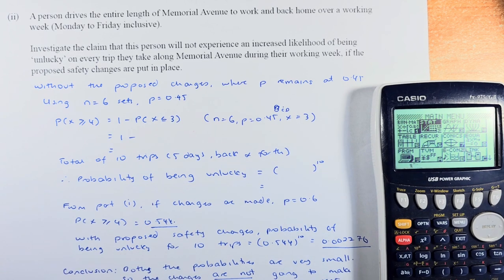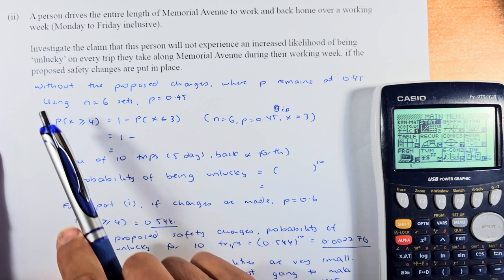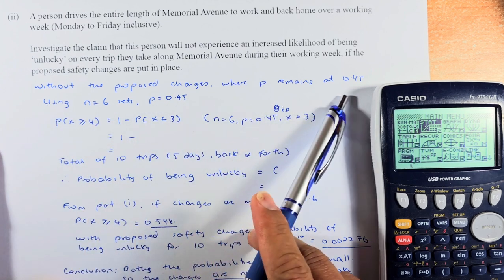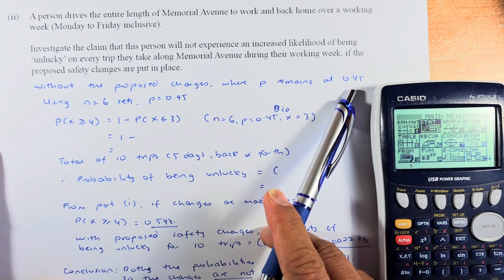A person drives the entire length of Memorial Avenue to work and back home over a working week, Monday to Friday. So there are 5 days, and if they go up and down, it's going to be 10 trips altogether. Investigate the claim that this person will not experience an increased likelihood of being unlucky on every trip they take along Memorial Avenue during their working week if the proposed safety changes are put in place. Without the proposed changes, where P remains at 0.45.